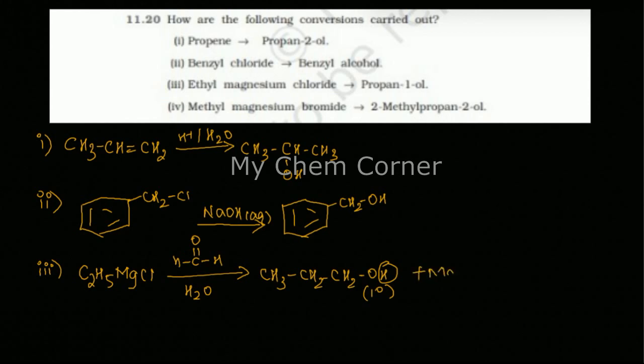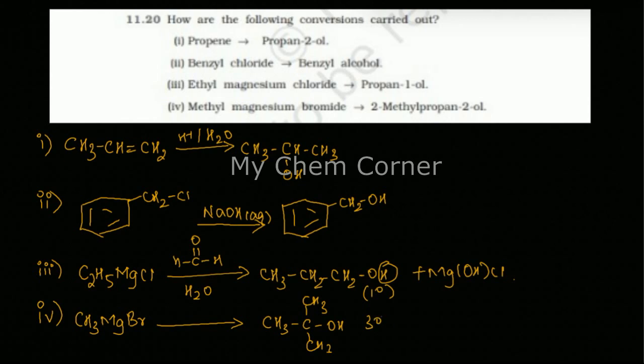The last equation is methyl magnesium bromide, again Grignard's reagent, to form 2-methylpropan-2-ol. I have CH3, CH3, C-OH, and CH3. In this molecule, what kind of an alcohol am I forming? I'm forming a tertiary alcohol. When I have a tertiary alcohol, I've told you, you should have a ketone, so here I'm having a ketone.